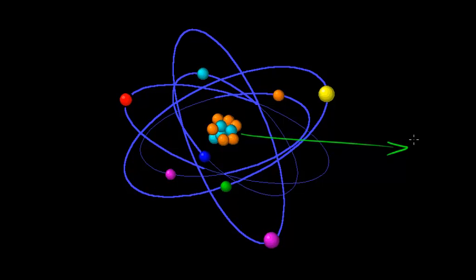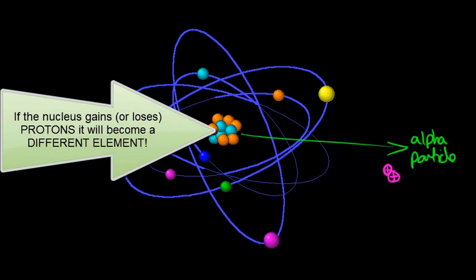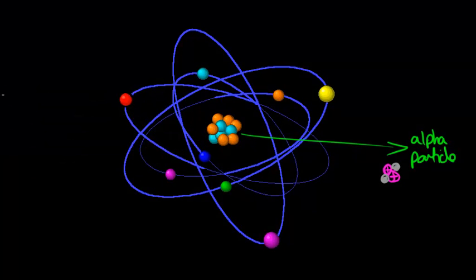We've got an alpha particle that can be spat out of the nucleus. An alpha particle is two positively charged protons together with two neutrons, and that's quite a heavy particle. In fact, that's the same particle that Rutherford used to investigate the structure of an atom when he shot these particles at a gold foil.